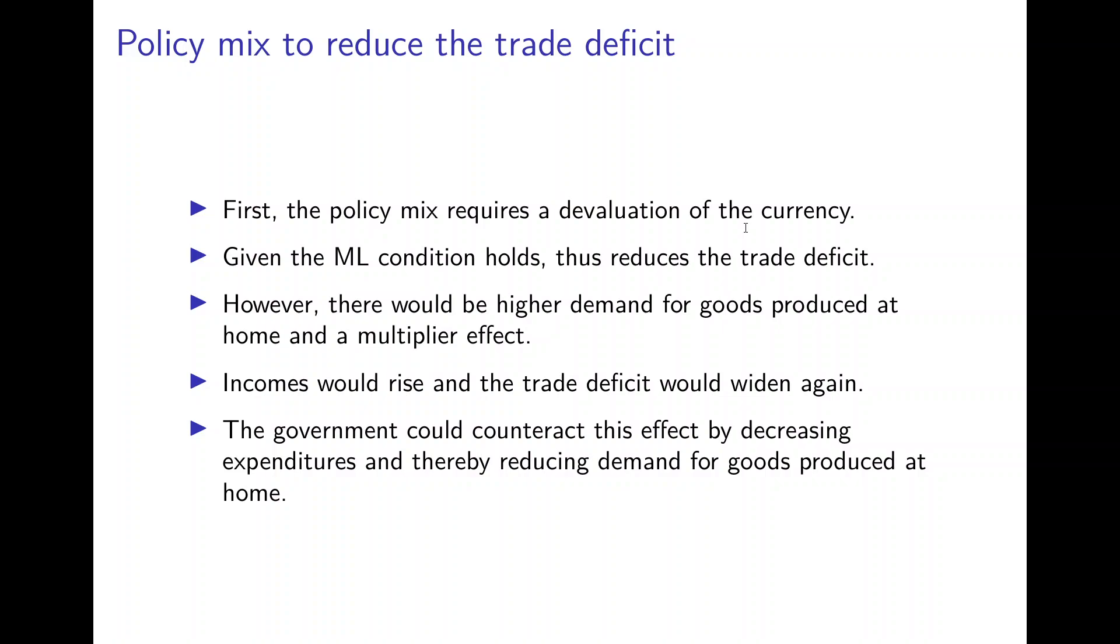But the government can counteract this by reducing G, government consumption. The government could change G to such an extent that the shift in the ZZ curve is completely sterilized, such that the old equilibrium in the goods market would prevail at the old level of demand and income, and at that point the trade deficit would be eliminated.